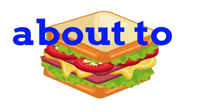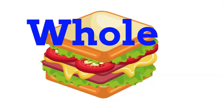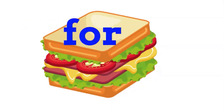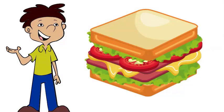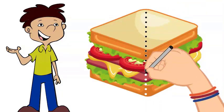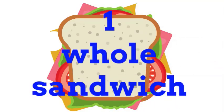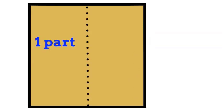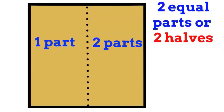Imagine you are about to eat one whole sandwich and your little brother walks in and says, 'Can I get a piece of your sandwich?' You're going to be a good sibling and share the sandwich fairly and equally — cut it down the middle like this. We take the whole sandwich, represent it as a square, and cut it. Now we have one part, two parts. When we have two equal parts, we call those two halves.